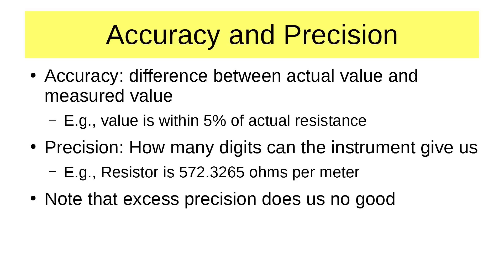We've got to have the usual discussion about accuracy and precision. Accuracy is the difference between the actual value, whatever it is, and the measured value. For example, we can say that the value that we measure of a resistor will be within 5% of the actual resistance. And that's actually pretty good measurement right there. Precision is how many digits the instrument gives us. For example, the resistor could be 572.3265 ohms according to the meter. But if it's only within 5% of the actual resistance, only the first maybe two digits of that have any meaning at all. The excess precision does us no good. And we must not confuse excess precision with accuracy.